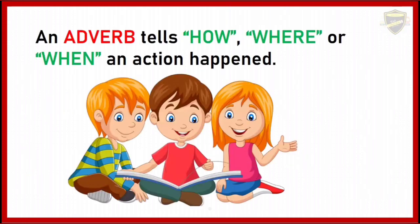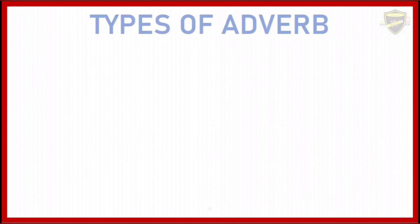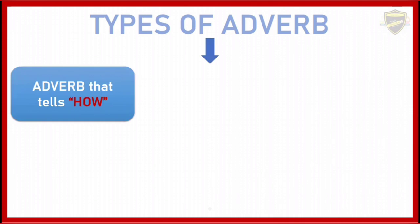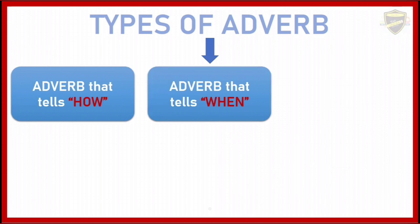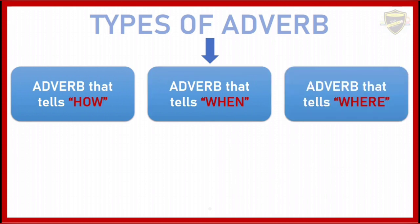An adverb tells how, where, or when an action happened. Now let us see the types of adverb: adverb that tells how, adverb that tells when, and adverb that tells where.